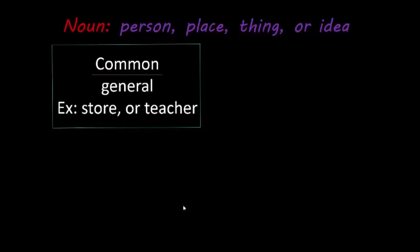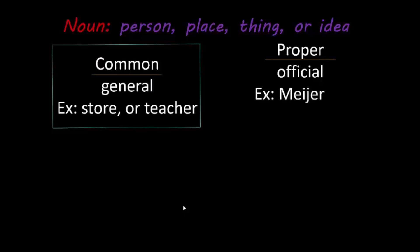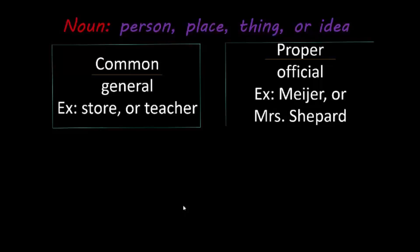The next one is a proper noun. A proper noun is specific — it is an official name of a person, place, or thing. So if I was going to give the store a specific or official name, I'd call it Myers. Or if I was going to give the teacher a specific or official name, it'd be Mrs. Shepherd. So I'm giving a specific name to the noun.